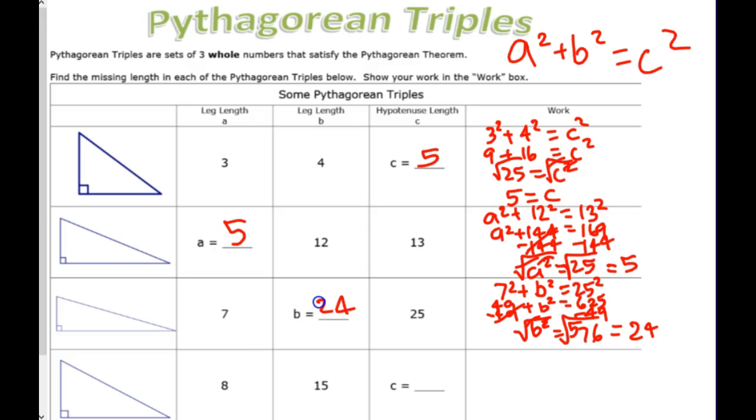24. So, 7, 24, 25. That's a Pythagorean triple. Again, if you know 2, you can figure out the 3rd. If you memorize the triple.